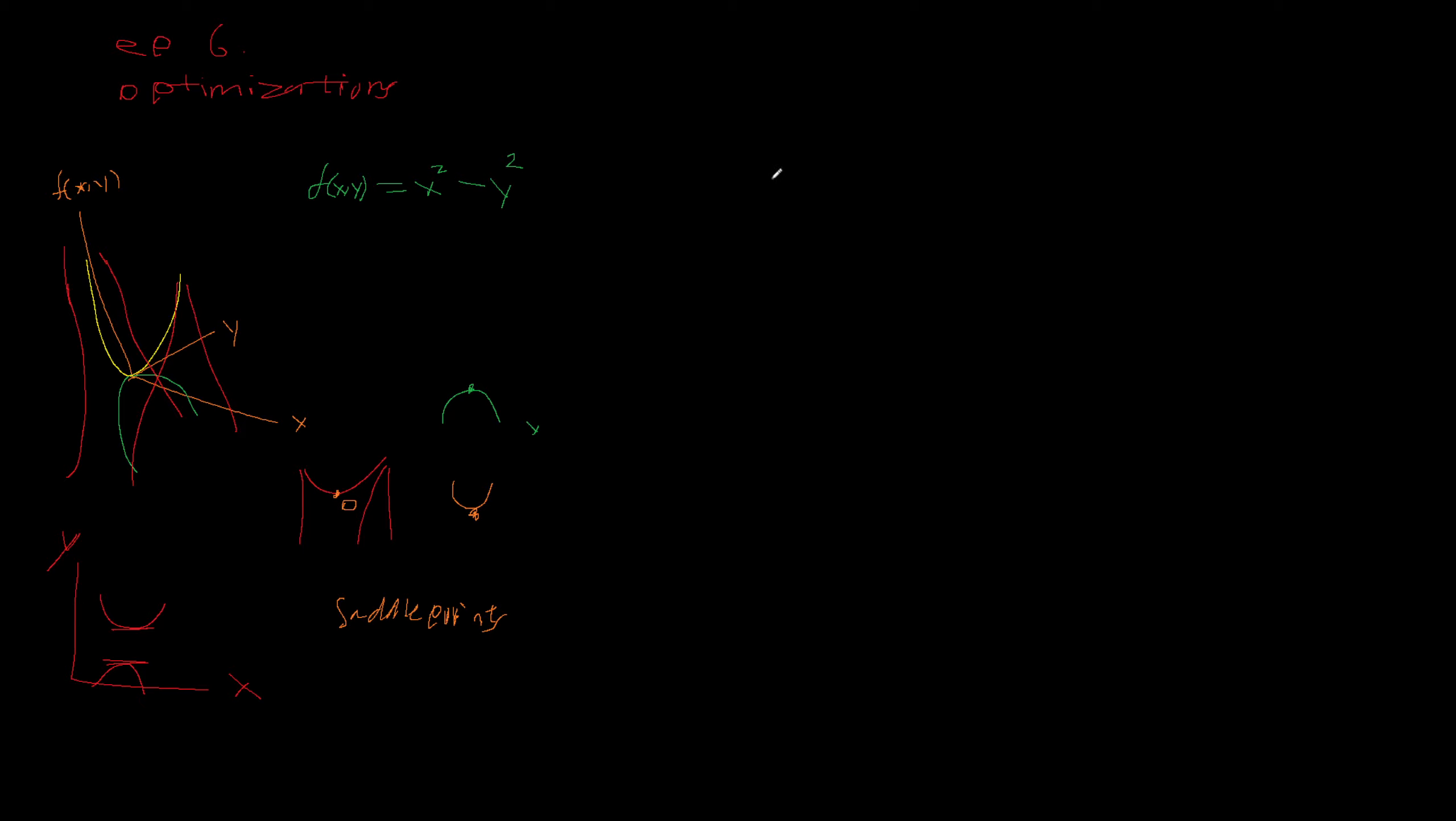Let's define what maximum and minimum look like. So first of all, a point A is a local maximum if for all x, so it's a local maximum of f, if for all x close to A, f of x is strictly less than or equal to f of A.